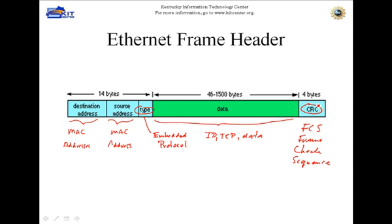So that's your Ethernet frame header. We've gone through the networking type layers: the transport layer, networking layer, and data link layer. This is what we're looking at now — this is the data link layer, and from here it's turned into ones and zeros and put on the network media.